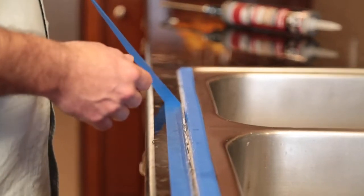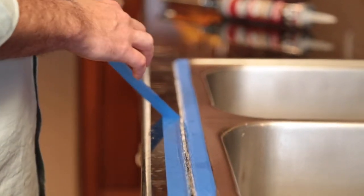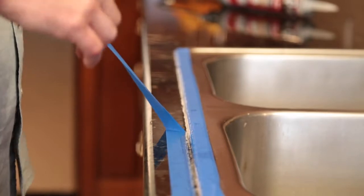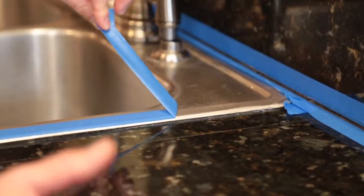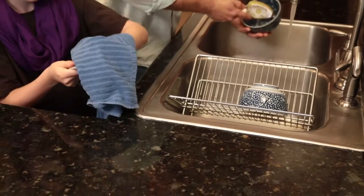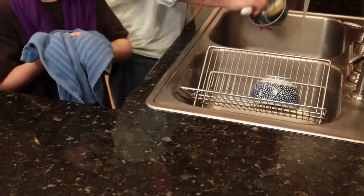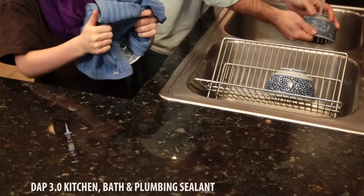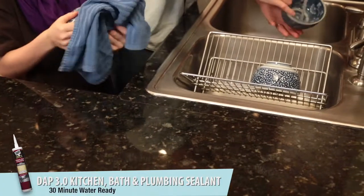If you applied masking tape, remove the tape before the sealant skins over. Just lift the edge up at a 45-degree angle and pull away from you. Let the sealant dry before exposing it to moisture. How much time is needed depends on the sealant that you use, so be sure to read the label. DAP 3.0 is ready for water exposure in just 30 minutes.